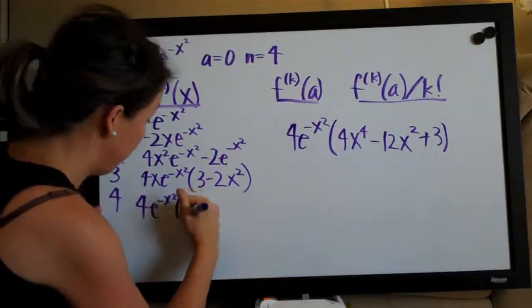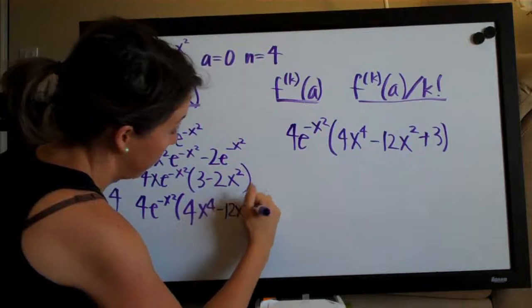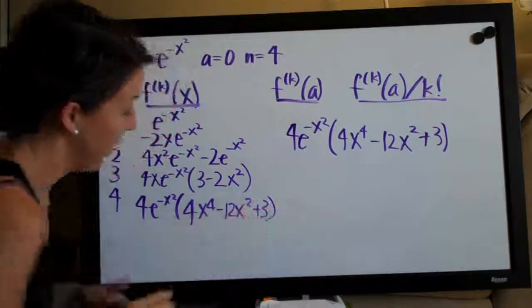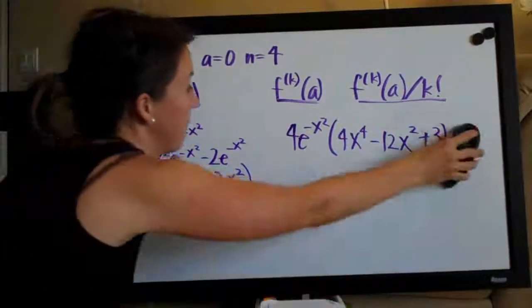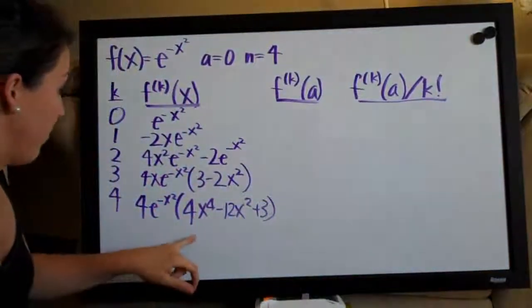4e to the negative x squared times 4x to the 4 minus 12x squared plus 3. So finally, I know this is super tedious, but this is what we have to do.